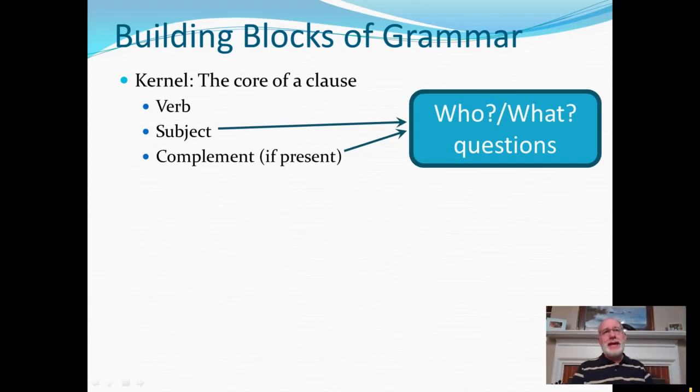So, for supper, we ate pizza. Okay, so ate is the verb. Who or what ate? We ate. So now I have the verb and the subject. We ate who or what? We ate pizza. So the who or what questions are really crucial in finding the subject and complement of the verb.